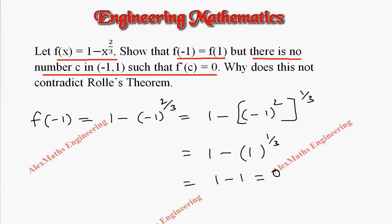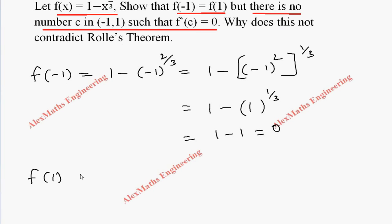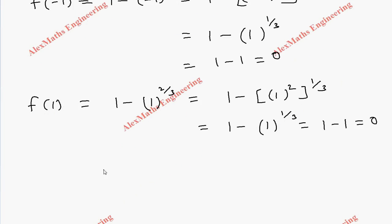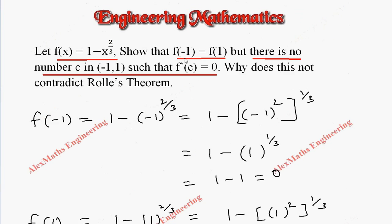In the same way, f of 1 equal to 1 minus 1 power 2 by 3. Again rewriting this: 1 square, then power 1 by 3. Once again we get 1 minus 1 power 1 by 3. Taking the real root alone, 1 minus 1, which is 0. So we get f of minus 1 equal to f of 1. So we got the first part.